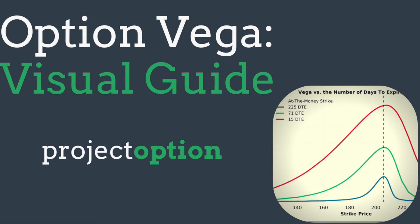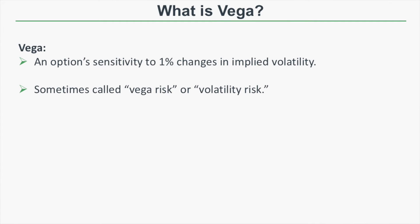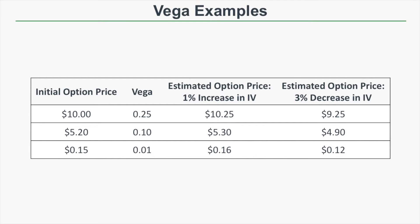What's up everybody, Chris here from Project Option. In this video you're going to learn about the option Greek known as vega. Vega represents an option's sensitivity to changes in implied volatility, so it is an important one. Vega represents an option's sensitivity to 1% changes in implied volatility — it's how much an option's price should change relative to 1% changes in implied volatility. This is also sometimes referred to as vega risk or volatility risk.